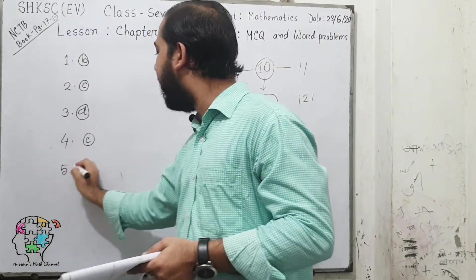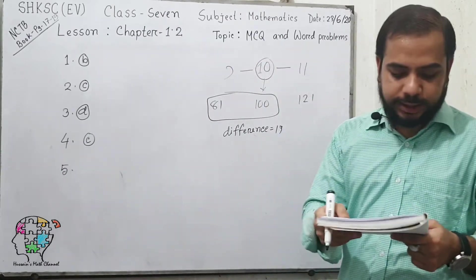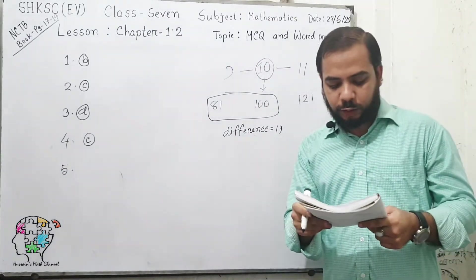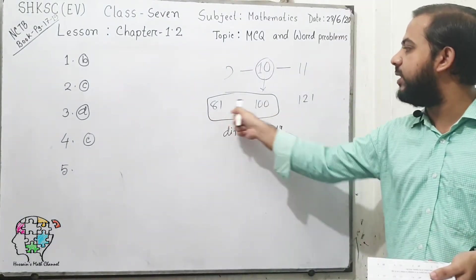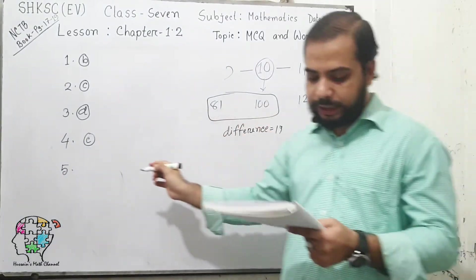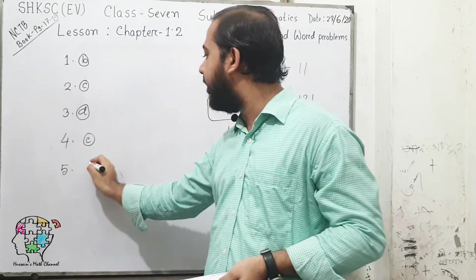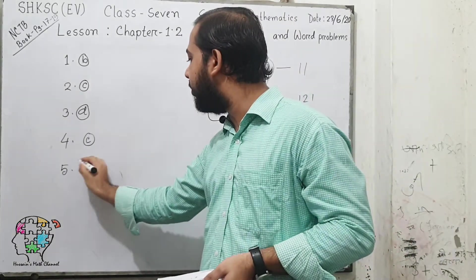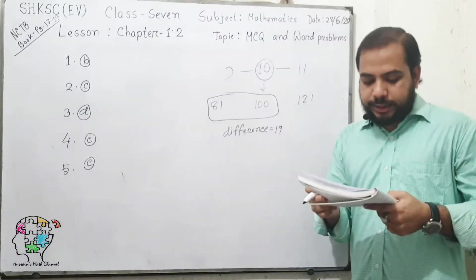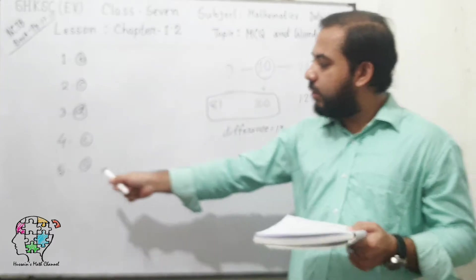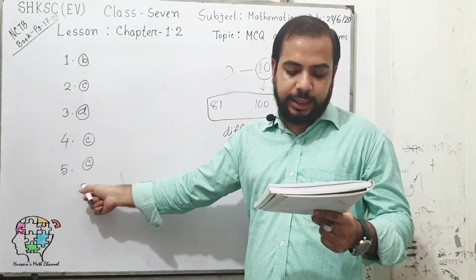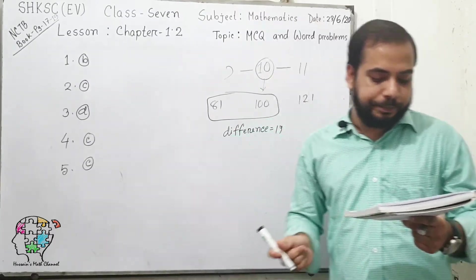Question number 5: what is the sum of the total squares of two numbers? The summation of 100 and 81 is 181. So the answer is also option C, 181.